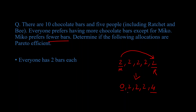Miko is better off with fewer bars in this distribution, and Ratchet prefers more bars. So if we give Miko's bars to Ratchet, both Miko and Ratchet are better off, and the other three people are not worse off either. That is a Pareto improvement. So if a Pareto improvement is possible, that means the original situation is not Pareto efficient.